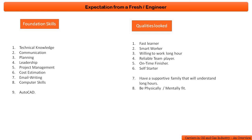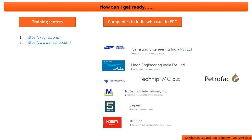Someone is asking if production engineering graduates are eligible for mechanical engineering posts. Yes, production engineers are eligible. By the third year, they cover the same subjects - strength of materials and thermodynamics - so they can enter this field. Be strong in fluid mechanics, thermodynamics, and strength of materials. Production engineers are eligible.